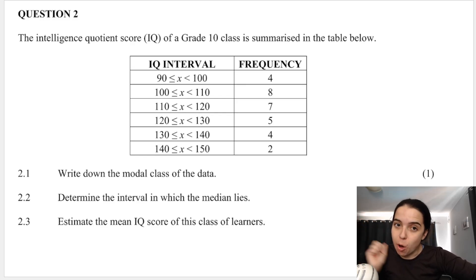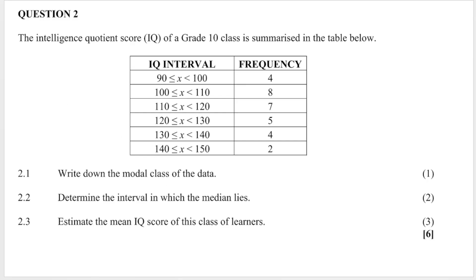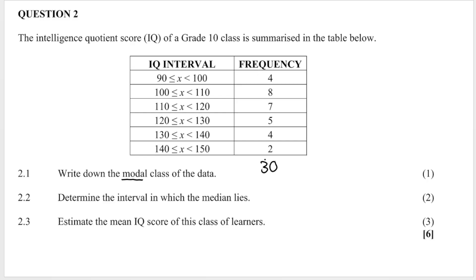Here's another question — pause the video and try it yourself. The IQ score of a grade 10 class is summarized in the table with different intervals and frequencies. In this case, the total number of learners is not given, so we add all the frequencies together. The modal class is the interval with the highest frequency, which is 8, so the answer is the interval 100 to 110.